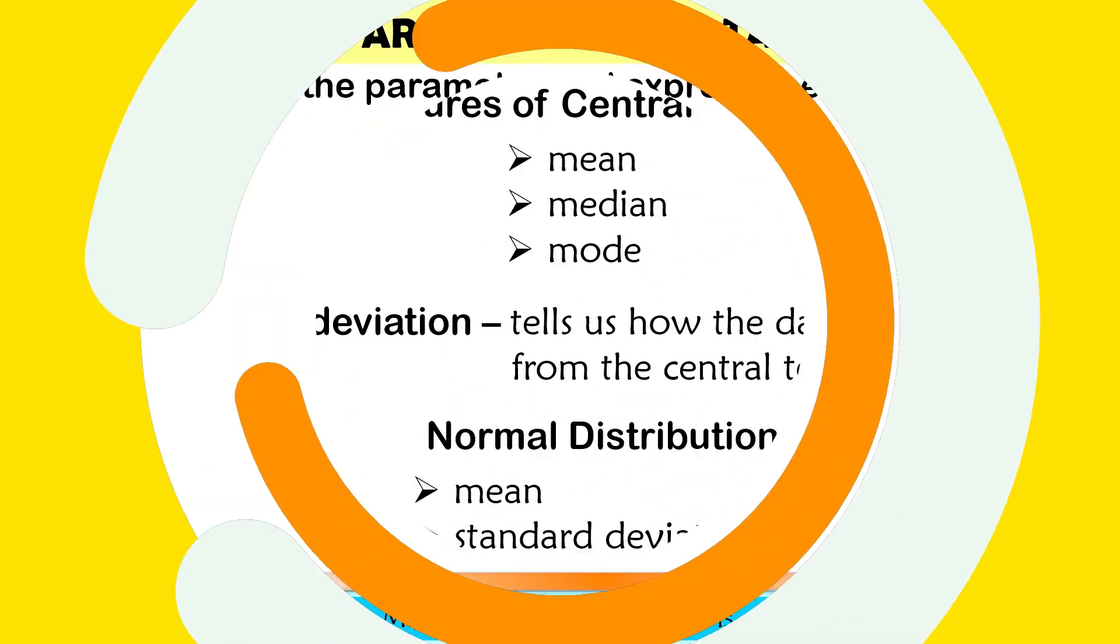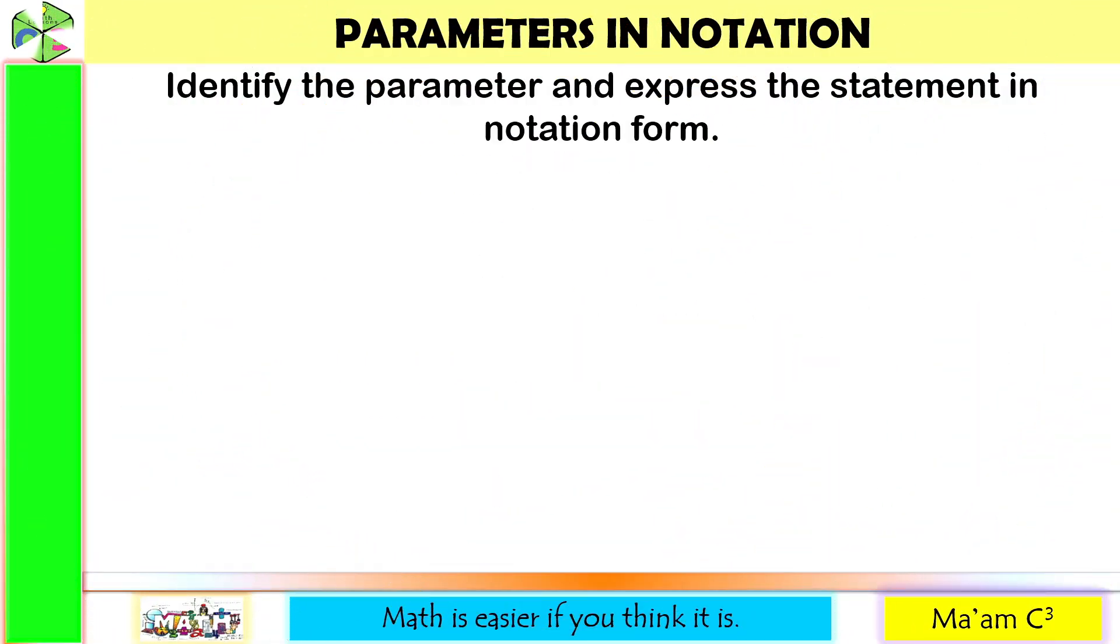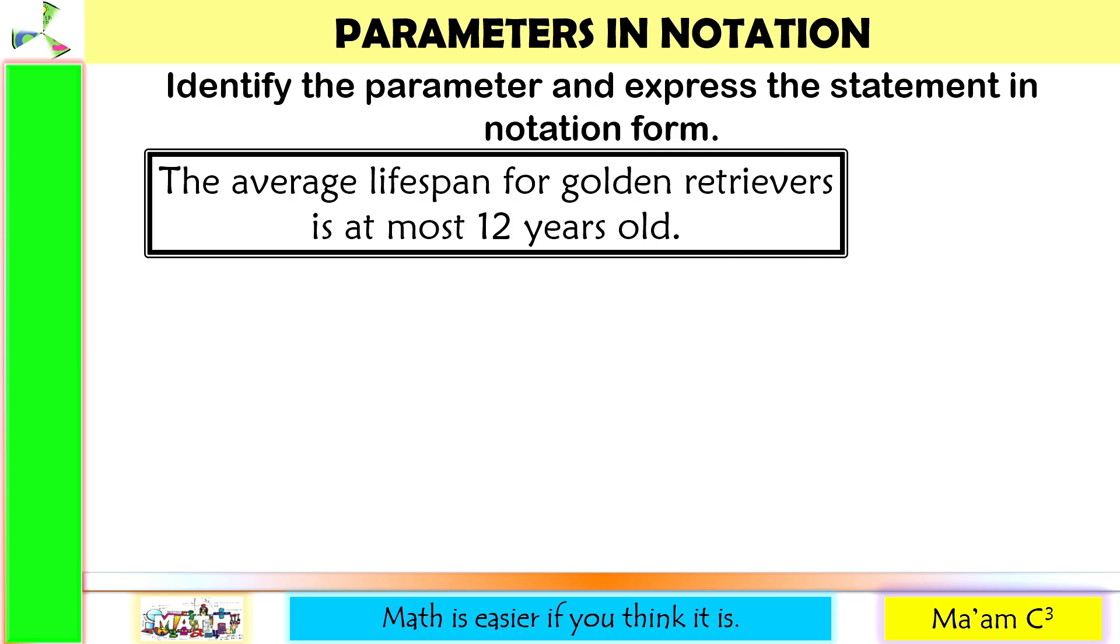Let's have an activity, parameters in notation. Identify the parameter and express the statement in notation form. Number one, the average life span for golden retrievers is at most 12 years old. So we are talking about average. The symbol of average in parameter is mu. And then we have here the keyword at most.